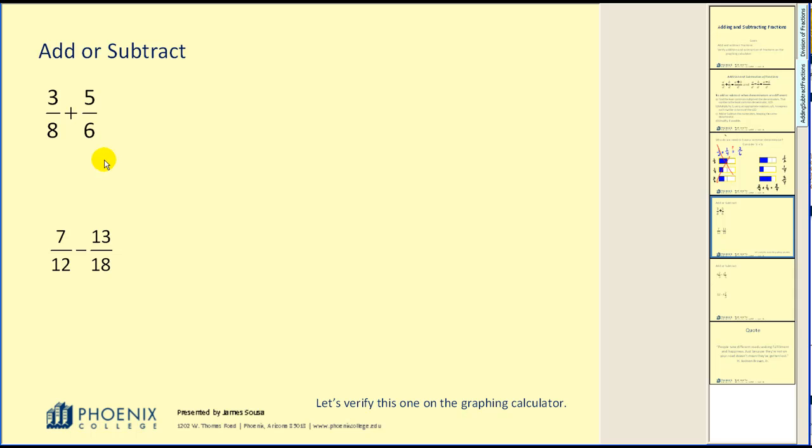Three-eighths plus five-sixths. We need to find the least common multiple of eight and six. There are a couple ways of doing this. If you can't just look at that and identify the LCD as 24, I'll show you a way that may be a little bit easier.